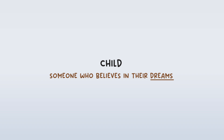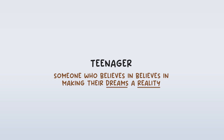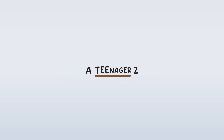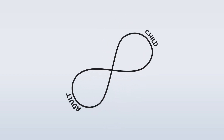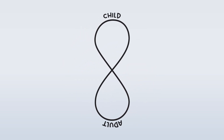If a child is someone who believes in their dreams, and an adult is someone who believes in reality, then a teenager is someone who believes in making their dreams a reality. They believe in themselves. Ateez proposes that we can all be teenagers. All children have the capacity to grow up, and all adults have the capacity to live younger. Anyone in the world can make their dreams a reality — and this just might be especially true when your name is Ateez.